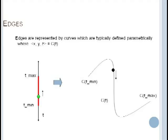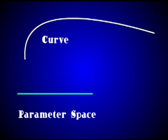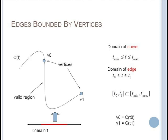If you think of the parameter space as representing some time interval and the curve is the path that we're traveling along then c of t is our location at time t. We may only use a portion of our curve for an edge so we create two points which serve as our beginning and ending points. Each point is called a vertex and corresponds to some min and max t value in our parameter space.